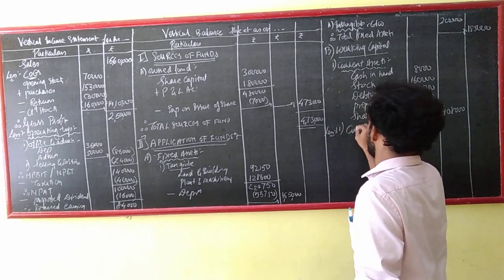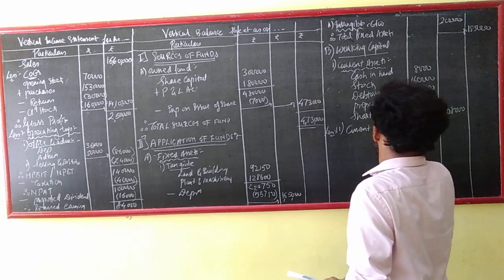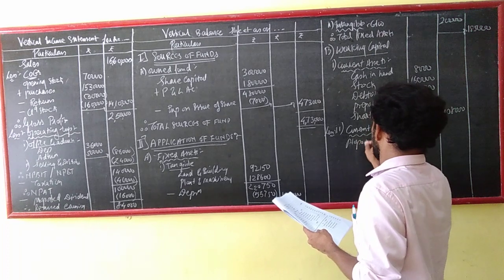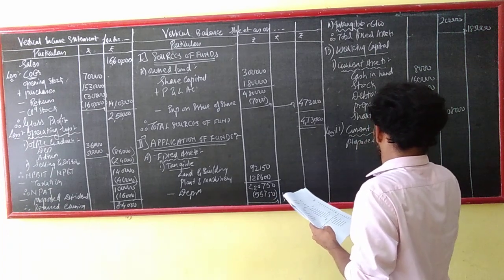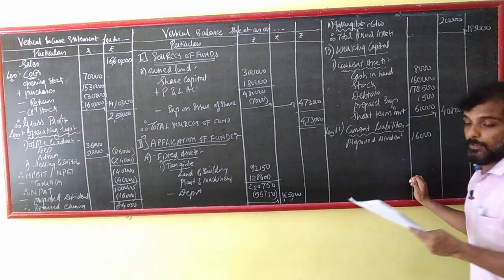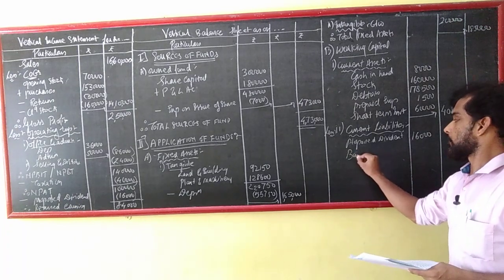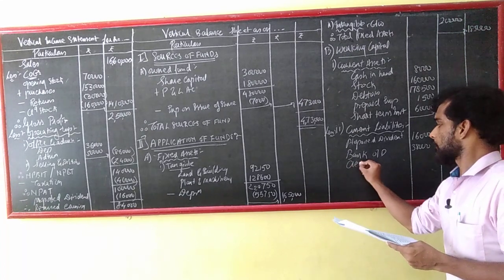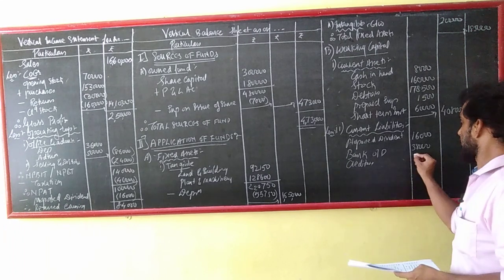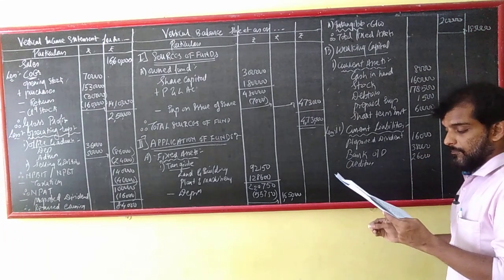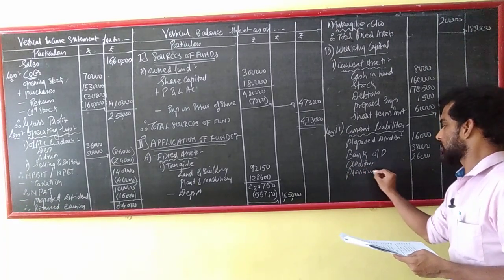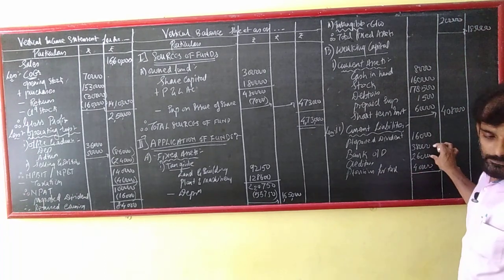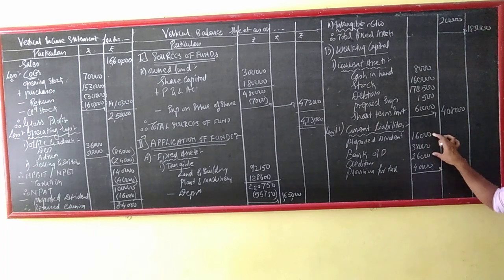Less current liabilities. Do I have any current liabilities? Yes, I have 4. Proposed dividend: 16,000 per hour. I have bank overdraft: 38,000. Creditors: 36,000. Provision for tax: 40,000. That means total current liabilities: 42, 48 plus 38 is 80, 80 plus 14 is 120.